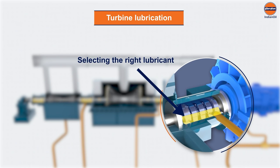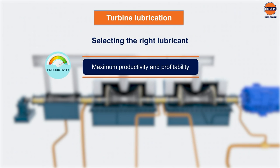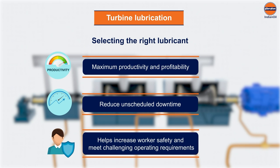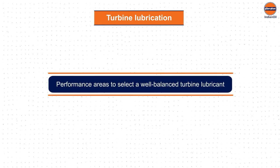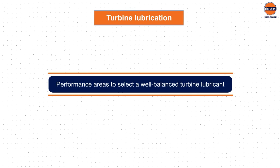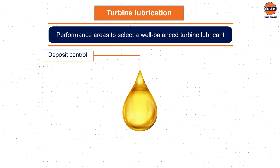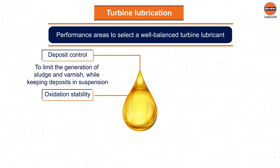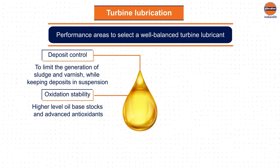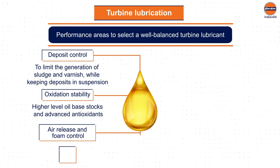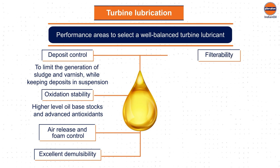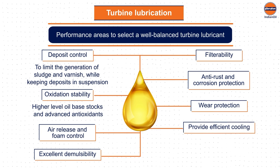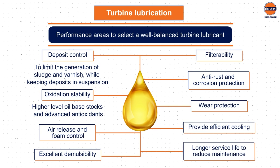By selecting the right lubricant, turbine operators can maximize production and profitability, reduce unscheduled downtime, increase worker safety, and meet challenging operating requirements. To select a well-balanced turbine lubricant, one should consider the following performance areas: deposit control to limit sludge and varnish, oxidation stability with higher-level oil-based stocks and advanced antioxidants, air release and foam control, excellent demulsibility, filterability, anti-rust and corrosion protection, wear protection, efficient cooling, and longer service life to reduce maintenance.